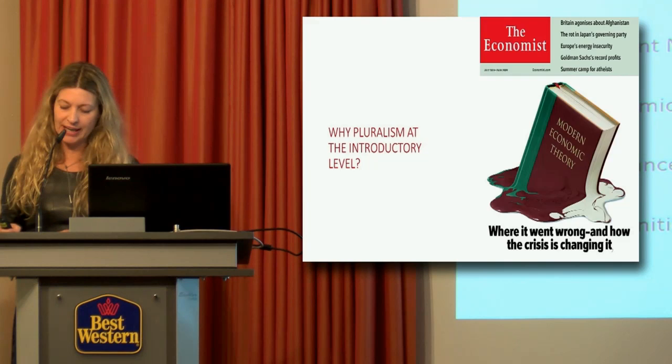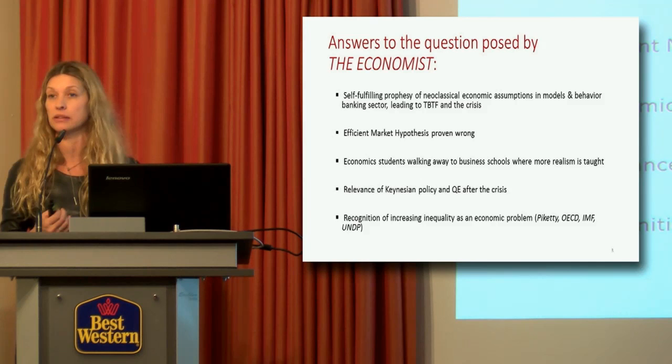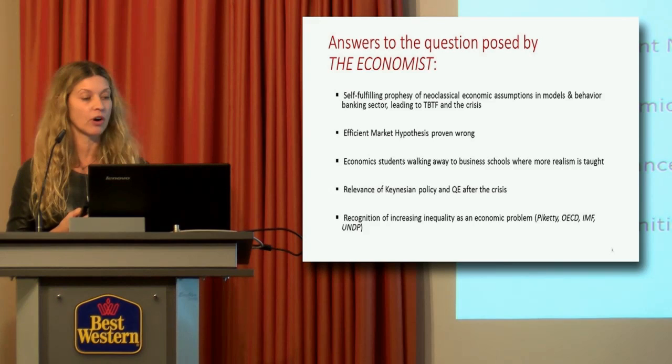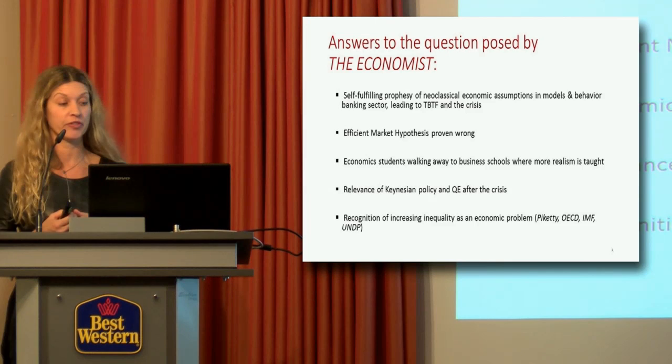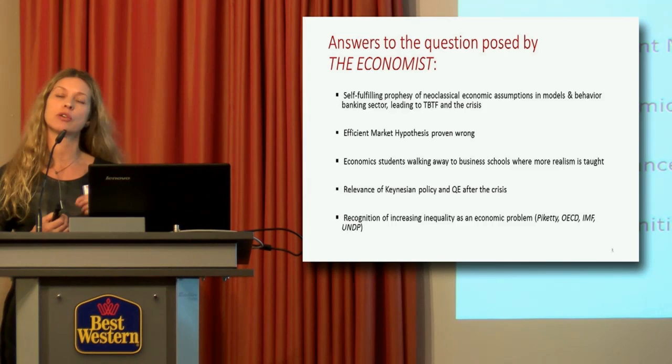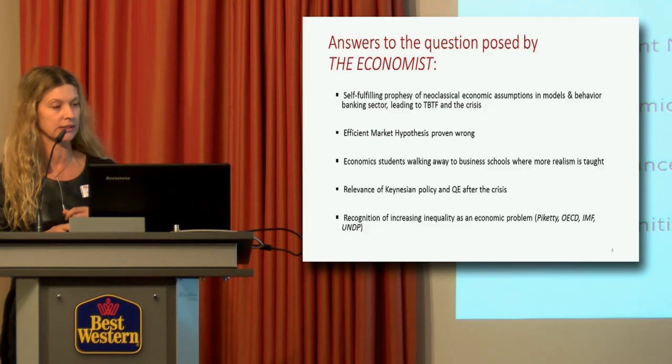I think there are a couple of answers to the question posed by The Economist: the self-fulfilling prophecy of neoclassical economic assumptions in models and behavior in the banking sector leading to too-big-to-fail and the crisis; the efficient market hypothesis proven wrong; economic students walking away from economics departments towards business schools where they feel more realism is taught; the relevance of Keynesian policy and QE after the crisis; and a recognition of increasing inequality as an economic problem rather than just a political or social problem — Piketty, OECD reports, and recently also the IMF.